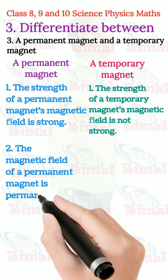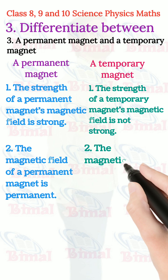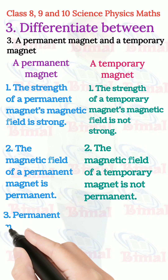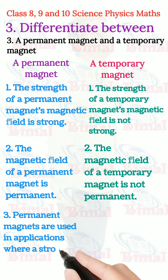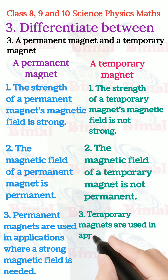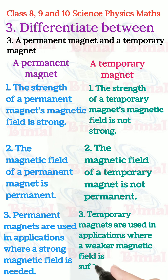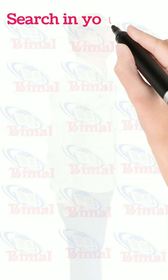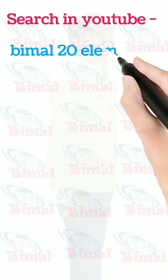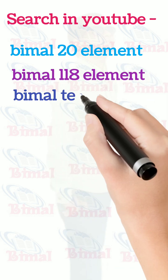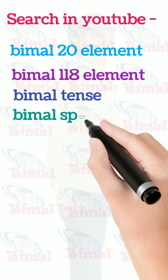The magnetic field of a permanent magnet is permanent, while the magnetic field of a temporary magnet is not permanent. Permanent magnets are used in applications where a strong magnetic field is needed. Temporary magnets are used in applications where a weaker magnetic field is sufficient.